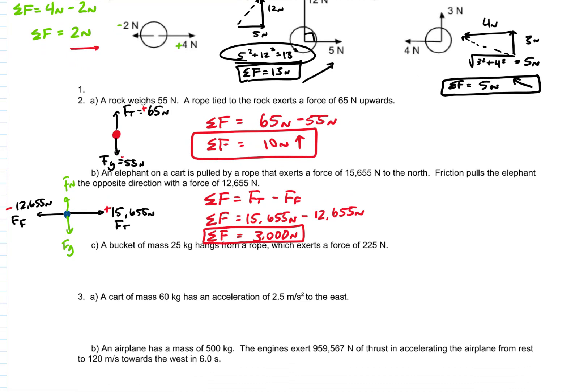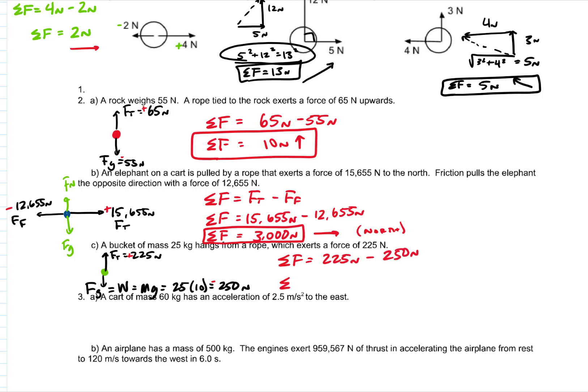For part C, we have a bucket hanging from a rope with an upward force of 225 newtons. We also have a downward force of weight, but we're not given the weight directly — we're given the mass. So we calculate weight as mass times g: 25 kilograms times 10 meters per second squared equals 250 newtons down. Net force is 225 minus 250, which is negative 25 newtons, so it's down.